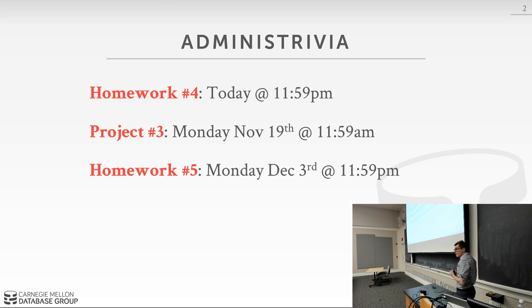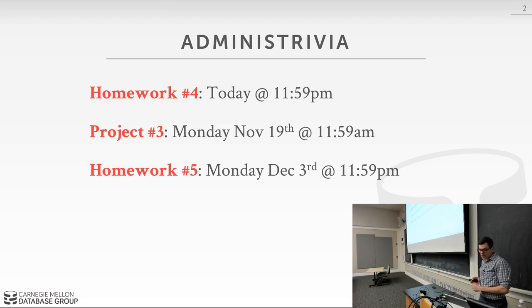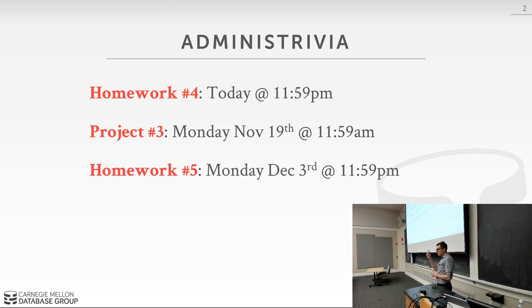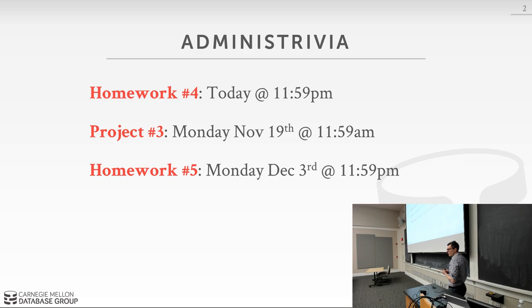We're nearing the end of the semester, so there are only a couple more deadlines. Homework four is due today at midnight. Project three is due next Monday at midnight, before the holiday. Homework five will go out next week and that'll be due December 3rd. Project four will be due at the end of the semester, before finals week. The extra credit is due around that time as well. We're almost done.